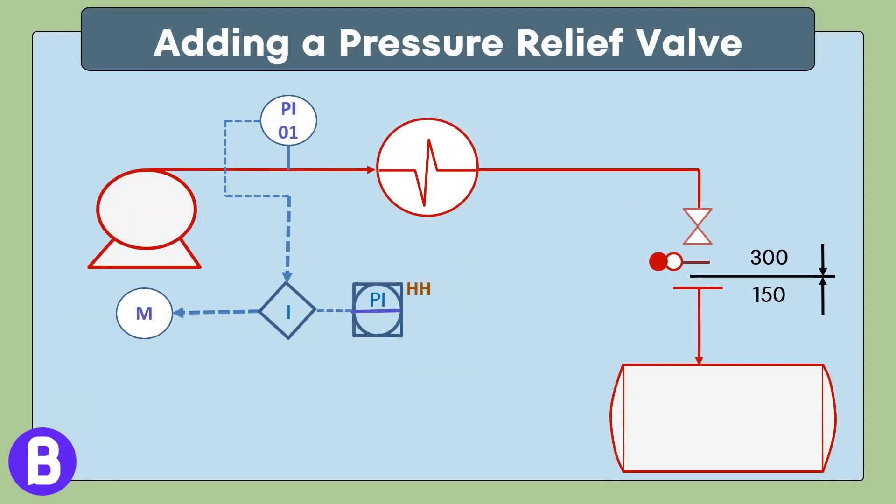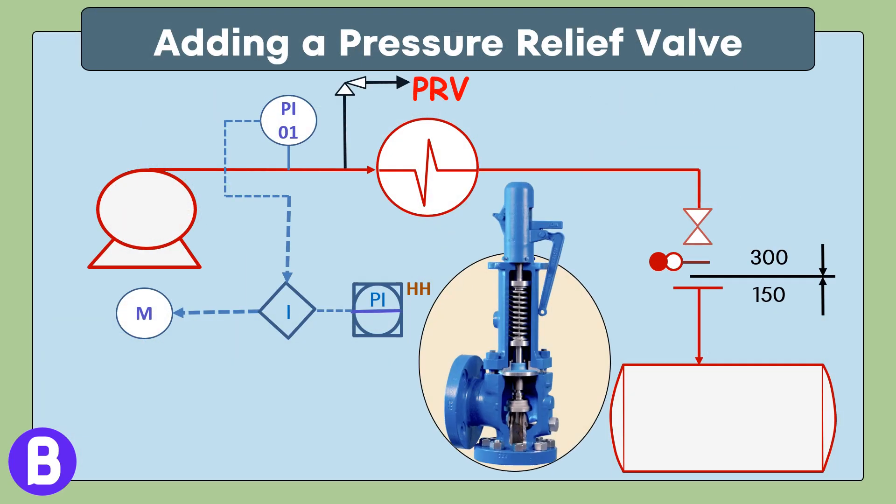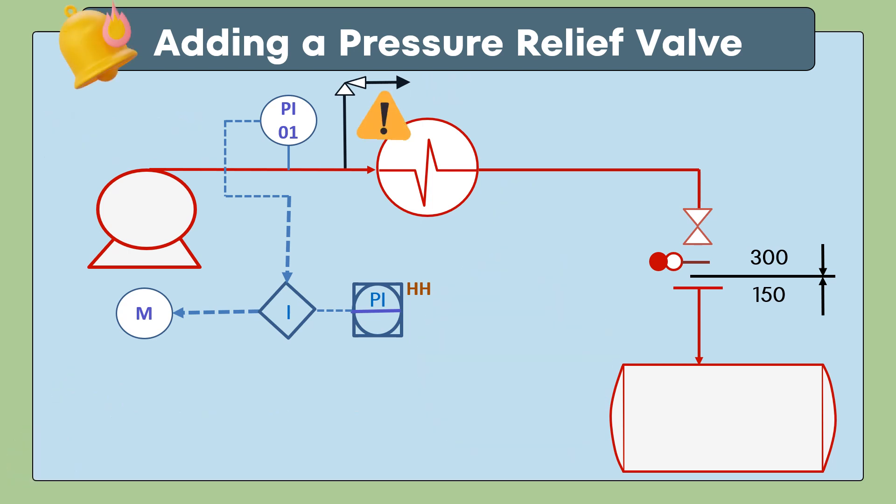What if we added a pressure relief valve as another safeguard in case tripping the pump at high pressure failed? This would create a layered protection approach acceptable within the safety integrity level framework. However, this led to a new issue related to the relief destination. Where shall the relieved fluid go?